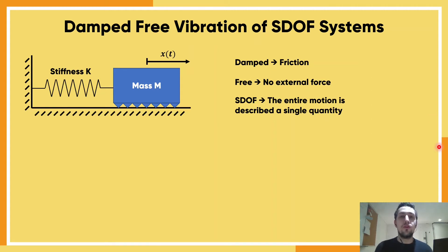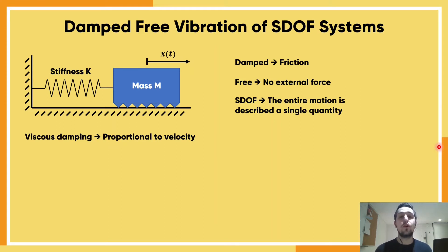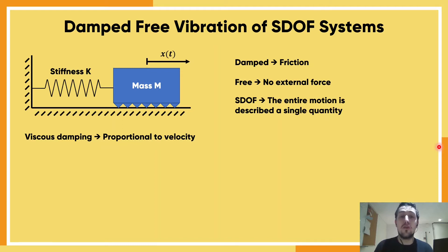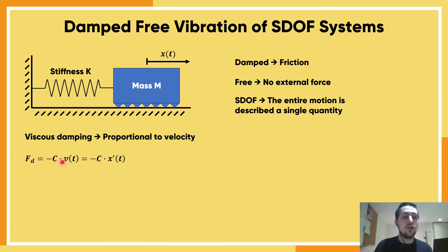The first concept we need to introduce is the definition of viscous damping. Viscosity in materials means that the properties change depending on the velocity at which you apply the loads. In terms of dynamic systems, this means the damping our system provides is proportional to the velocity of the mass itself. In equation form, the damping force is proportional to velocity, where c is the damping coefficient.